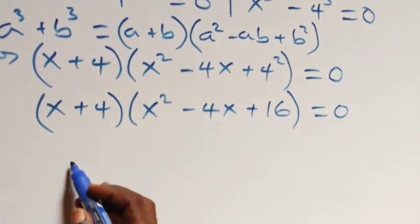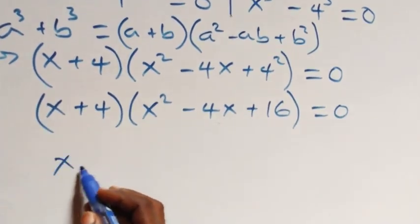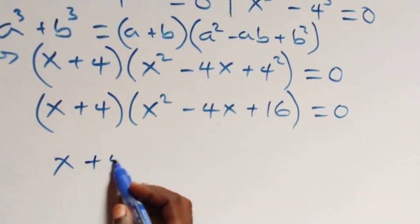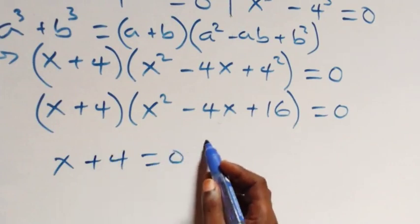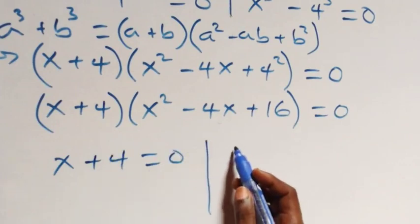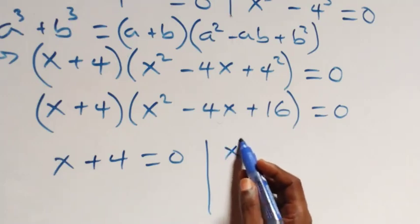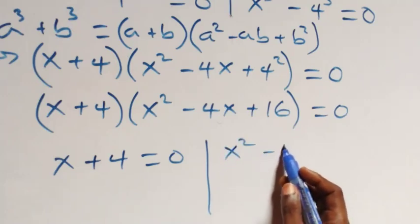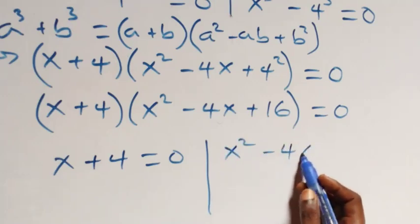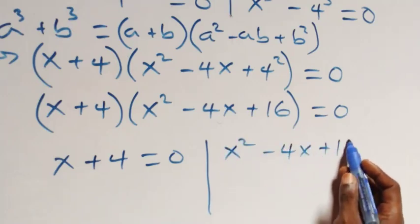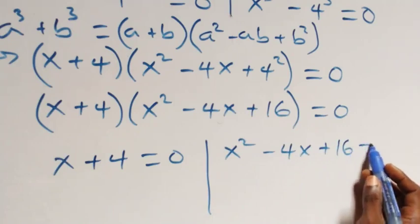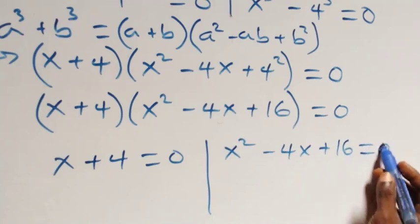This implies we have two possible cases: x + 4 equals 0, or x squared minus 4x plus 16 equals 0.